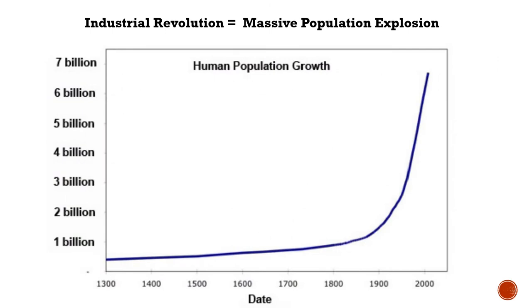The Industrial Revolution also represented an explosion in population. As industrial processes revolutionized farming and increased food supplies, increasing standards of living allowed more and more babies to survive infancy. You can see on this graph that human populations had a slow climb during the Middle Ages, then shoot up dramatically during the 20th century as the Industrial Revolution spread to every corner of the planet.